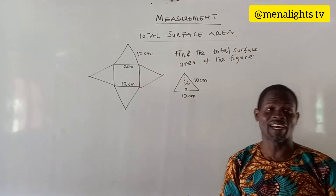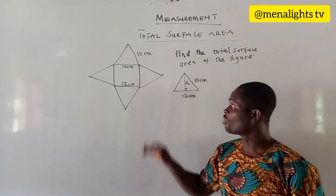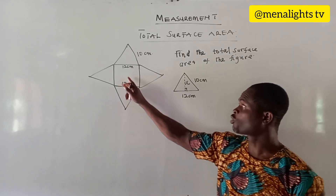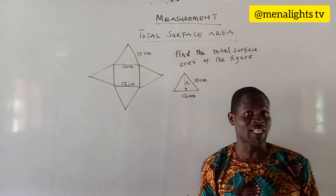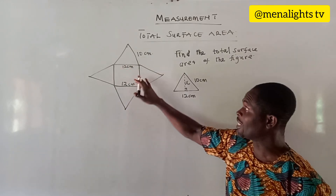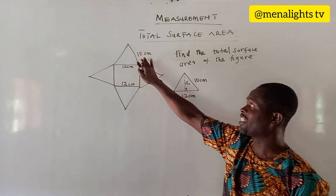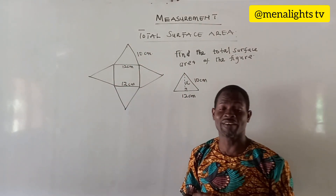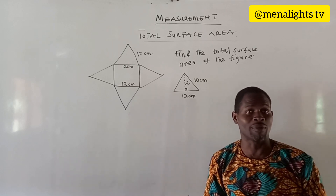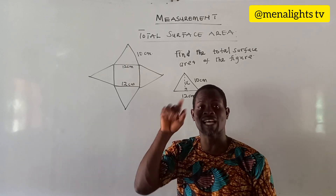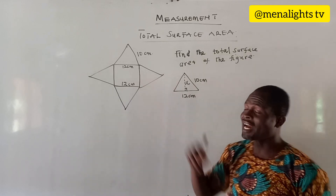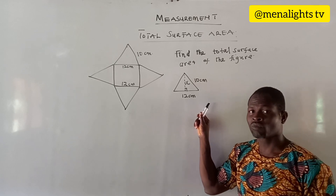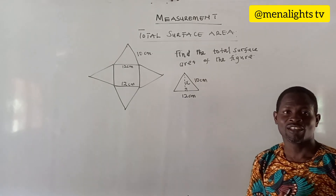The next question is to find the total surface area of this figure, which is a square base pyramid. The square has a dimension of 12 cm by 12 cm. The slant side of the triangle is 10 cm and the base is 12 cm. Before we can find the area of the triangle using the formula half times base times height, we note that the height of the triangle is not given, so we will use the Pythagorean theorem to find it.